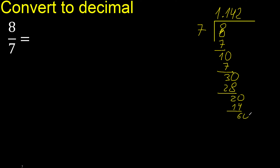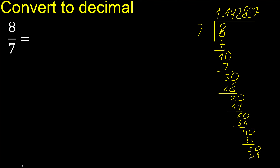7 multiplied by 8 is 56. Subtract, complete. 40: 7 multiplied by 5 is 35. Subtract, complete. 7 multiplied by 7 is 49. Subtract, complete. 10.